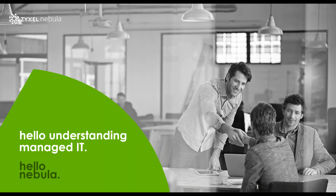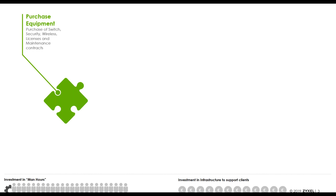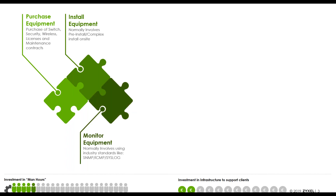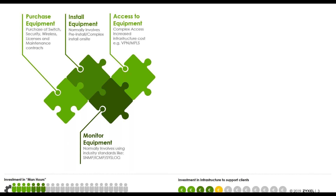Nebula is our centralised control platform for traditional networks — access points, switches, and gateways. In a traditional network you would need to purchase equipment, and as you can see, the investment in man hours and infrastructure to support clients can be quite costly. You'd purchase the equipment, install it — which takes up a lot of man hours both on site and in the office — then set up monitoring via SNMP, ICMP or a syslog server, and then set up external access via a VPN, MPLS network, or NAT rules.